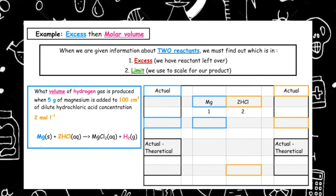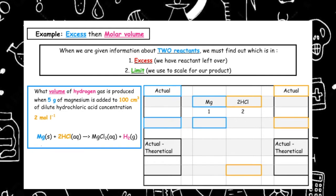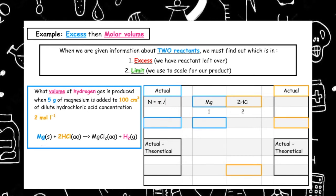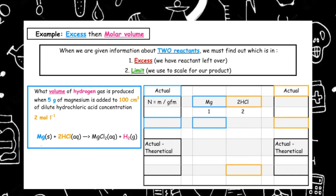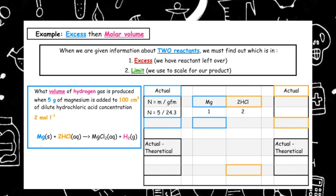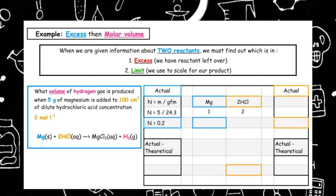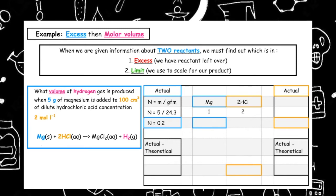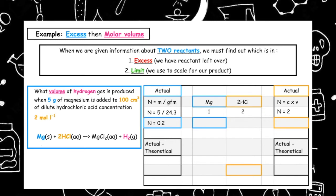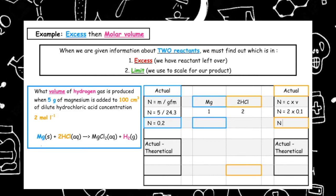We need to calculate the actual number of moles of each substance. For magnesium, we have been given a mass, so we use n = m/GFM. The number of moles is equal to 5 divided by 24.3, which gives us 0.2 moles. For the hydrochloric acid, we use n = C × V. The concentration is 2 times 0.1, which gives us 0.2 moles.